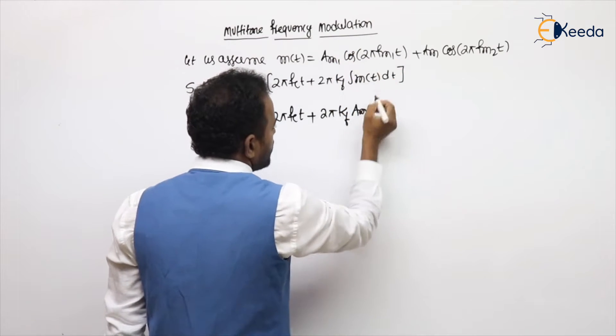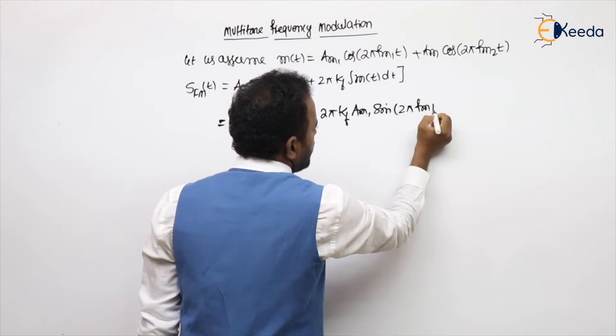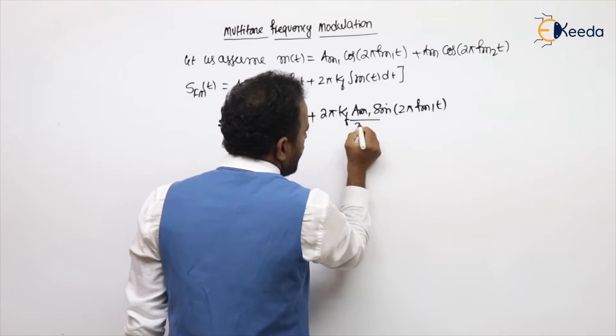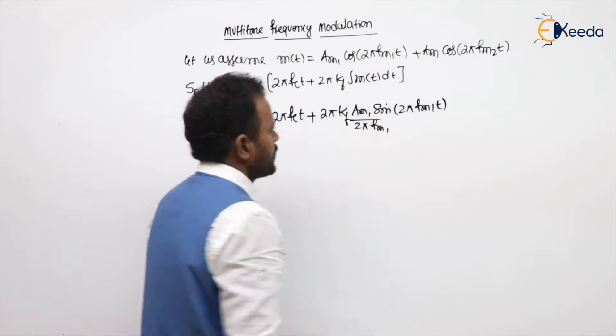Am1 is constant. Integration of cos is sine 2π fm1 t divided by 2π fm1. Next term also.